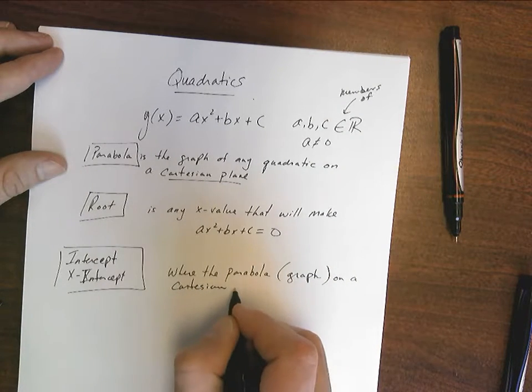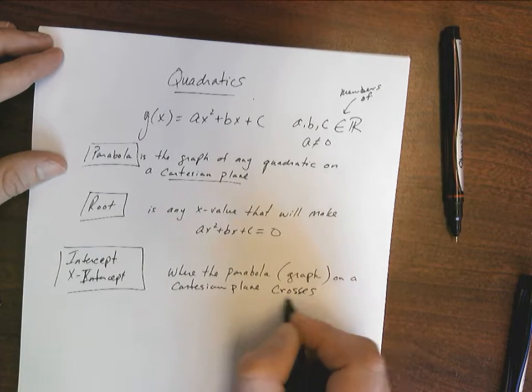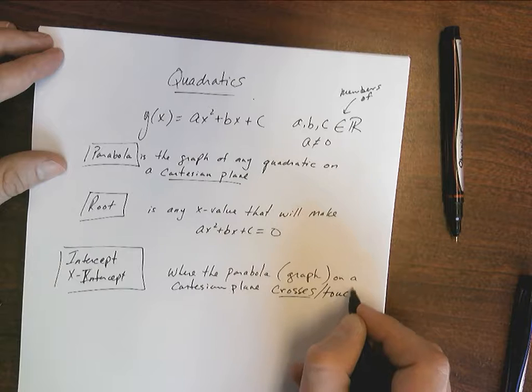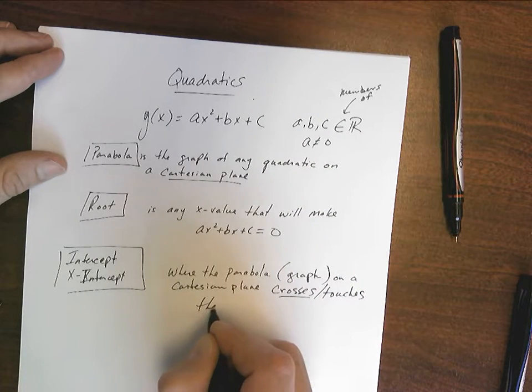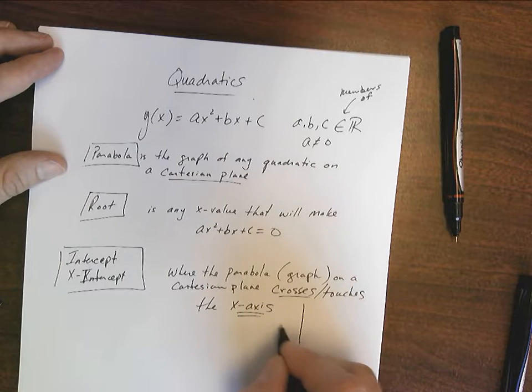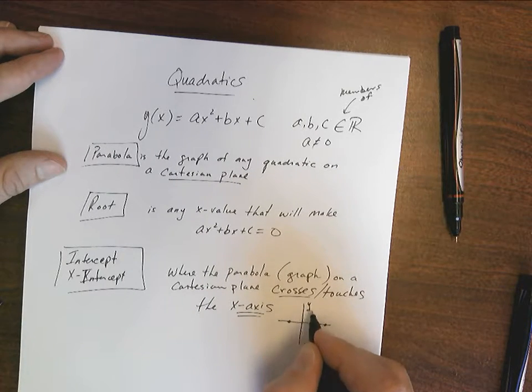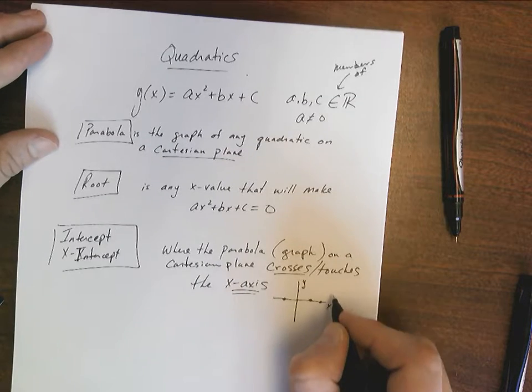crosses or touches the x-axis. And if it's going to touch the x-axis, it's going to be anywhere along here. And notice that y must equal zero for this.